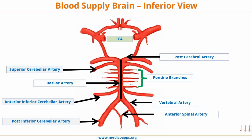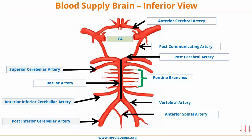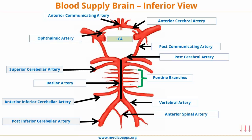Now, the internal carotid artery — this gives a posterior communicating artery, so the posterior communicating artery is a branch of the internal carotid artery. Anteriorly, it gives the anterior cerebral artery, and both anterior cerebral arteries give a branch that forms the anterior communicating artery, completing the Circle of Willis. The internal carotid artery also gives two other critical branches: the ophthalmic artery and the anterior choroidal artery.